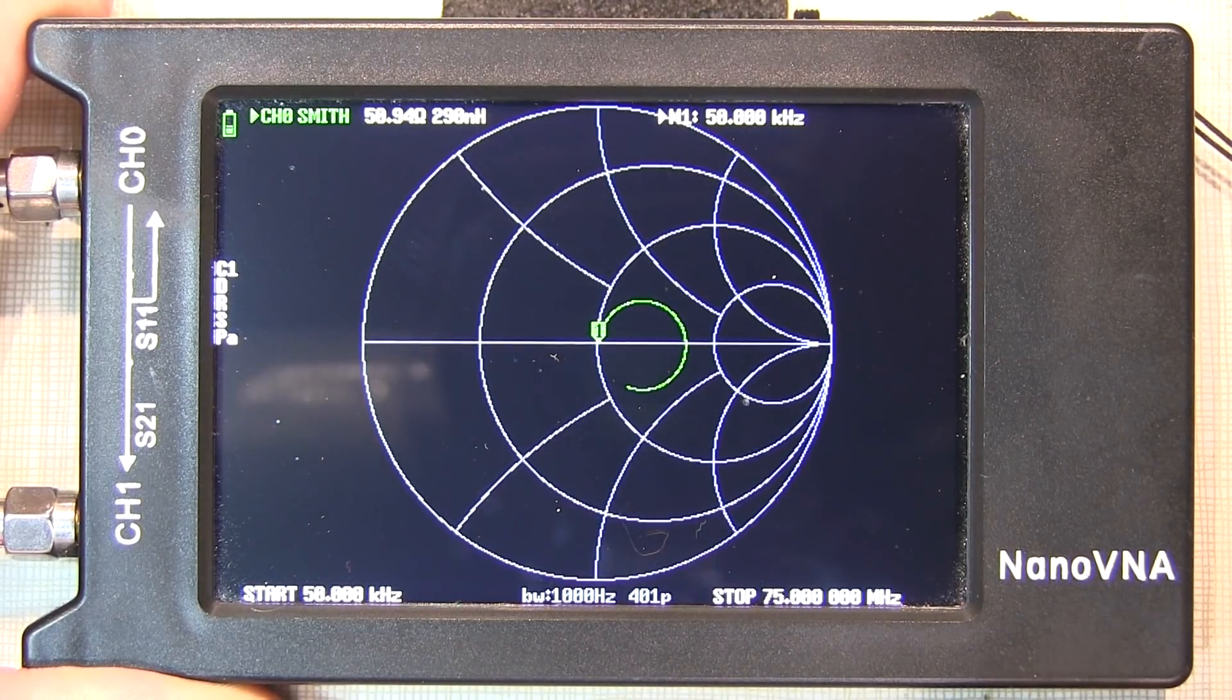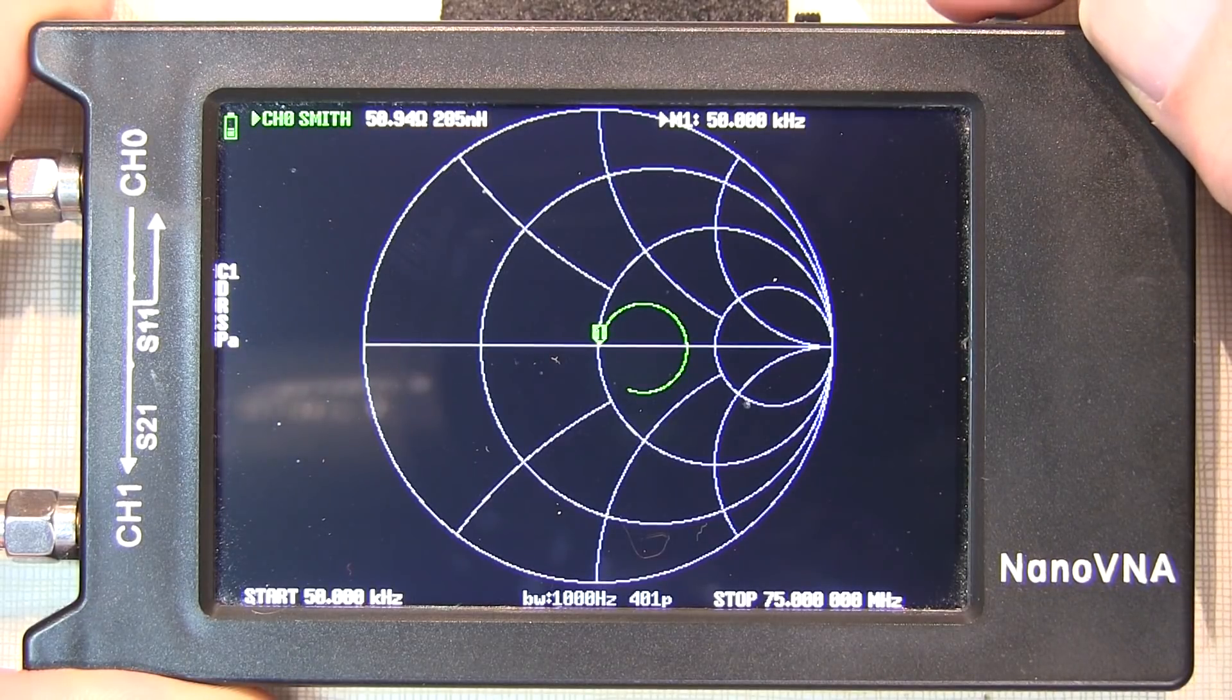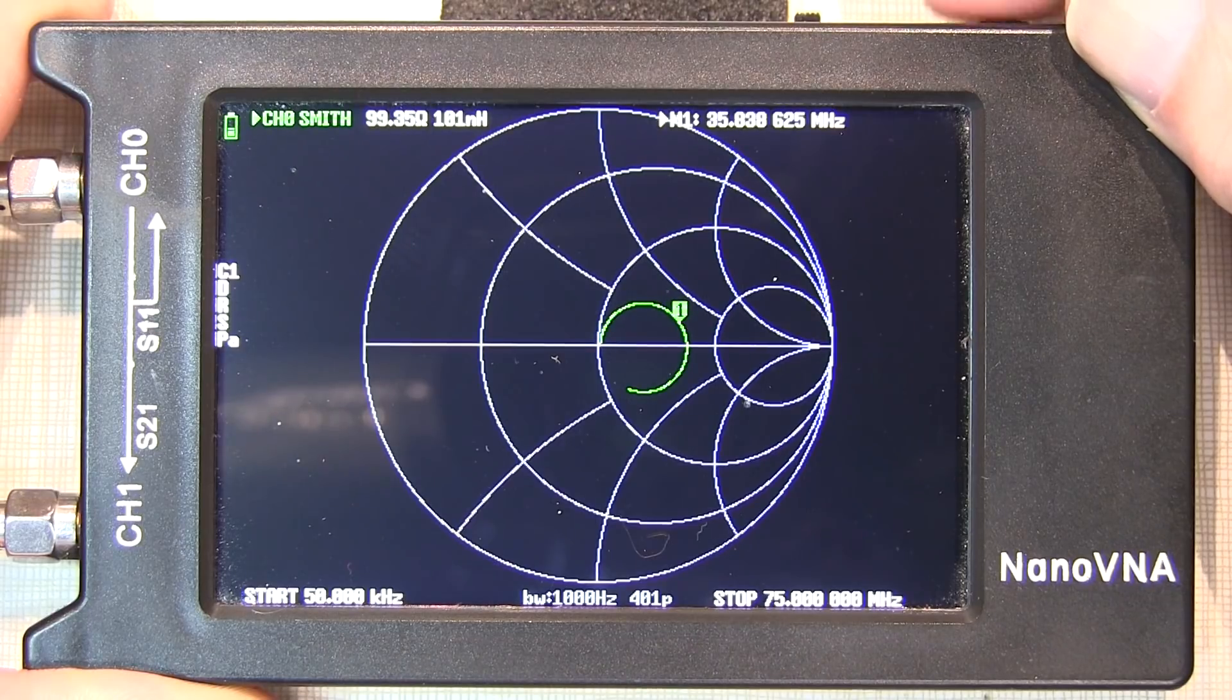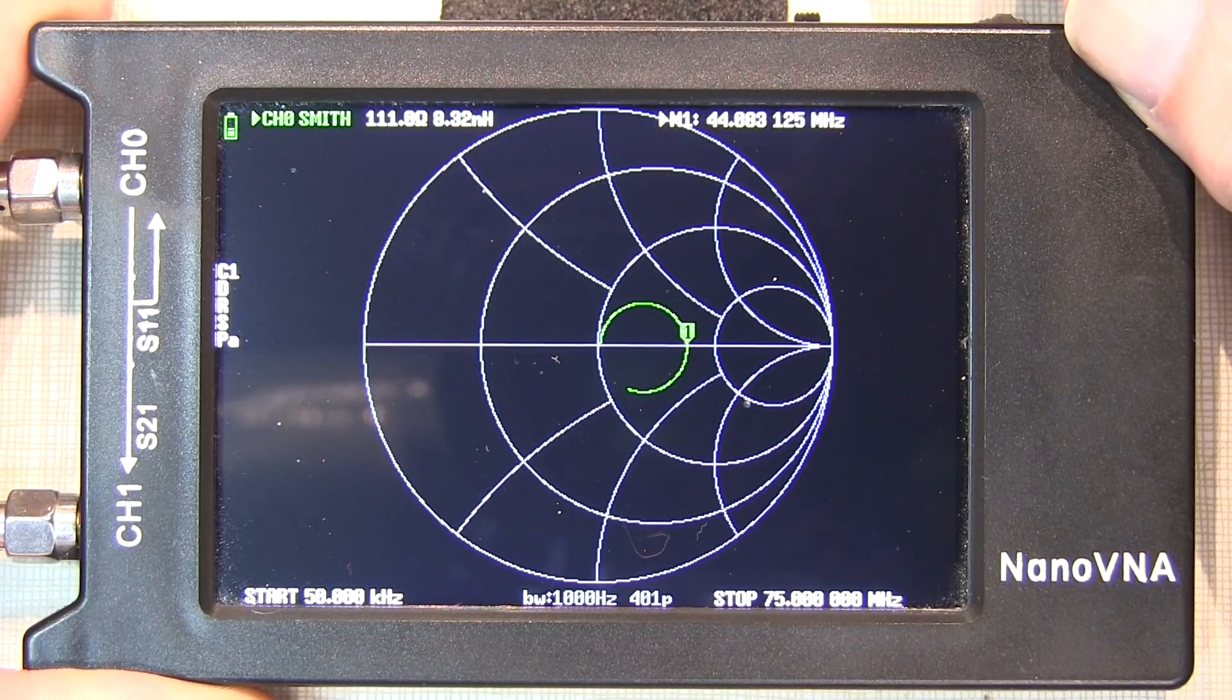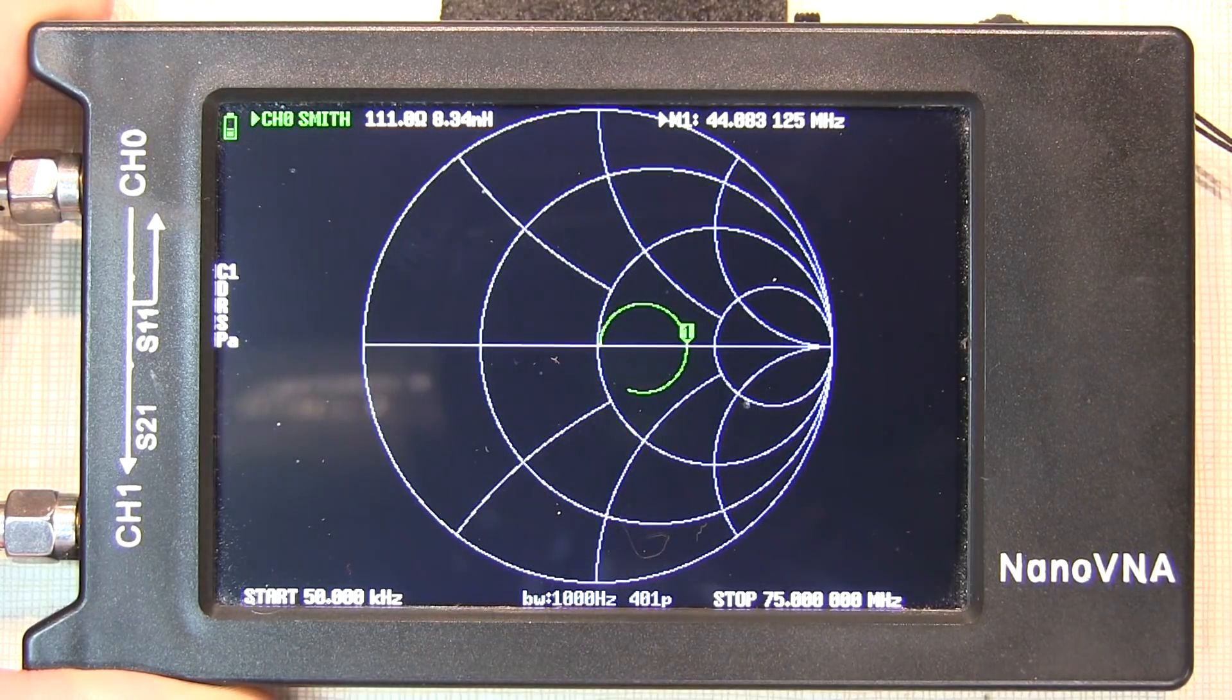You can check my previous videos to see how to do that. So with the unknown coax hooked up with a 50 ohm termination at the other end, I'm going to move the marker around until I cross the prime axis the first time. And we're going from a very low frequency at 50 kilohertz, because then we see essentially the 50 ohm termination.